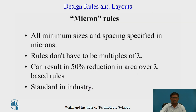In micron rules, all minimum sizes and spacing between different materials or layers are specified in microns. The rules do not have to be a multiple of lambda — any value can be taken. This can result in a 50 percent reduction in area over lambda-based rules, meaning micron rules require less size. Micron rules are mostly used in industry and are considered a standard.